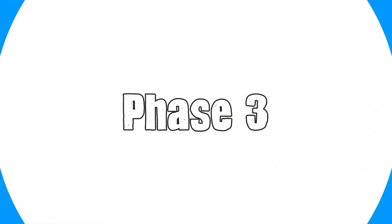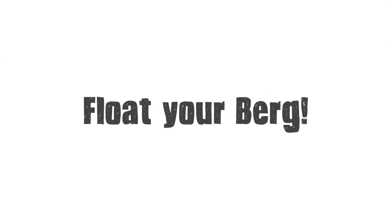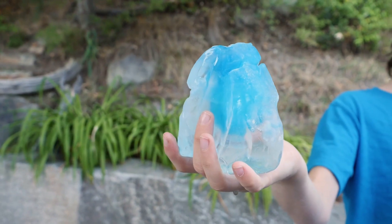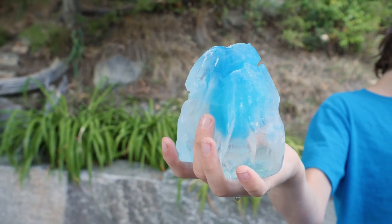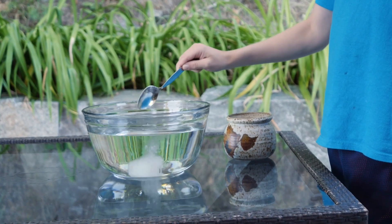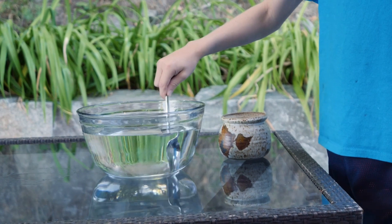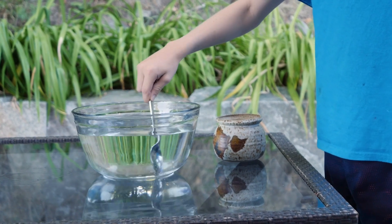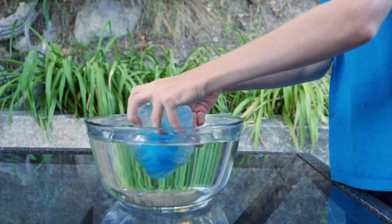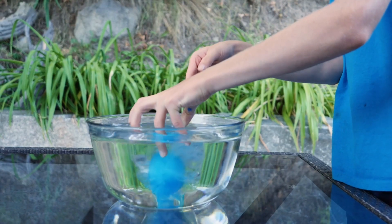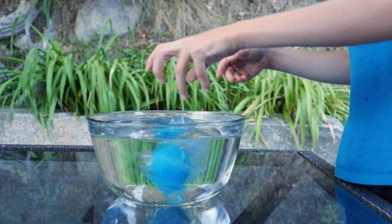Phase three: float your berg. Once the iceberg models are completely frozen, fill your tray or container with water and salt to represent the ocean. Place the miniature icebergs in water and watch them float. Observe and record what happens over time.